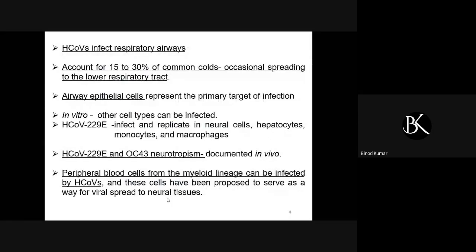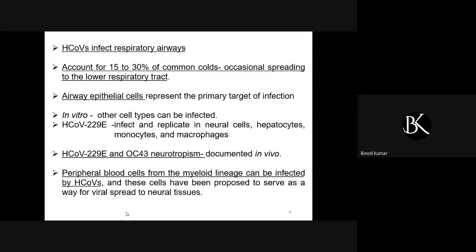When the virus infects, it generally infects the respiratory airways — the epithelial cells of the respiratory tract including the lungs. They account for 15 to 30 percent of the common cold and occasionally spread to the lower respiratory tract. Airway epithelial cells are the main target. However, the 229E strain can infect and replicate in neural cells, hepatocytes, monocytes, and macrophages. OC43 has shown neurotropism documented in vivo, and peripheral blood cells from myeloid lineages can also be infected, proposed as a pathway to spread the virus to neural tissues.